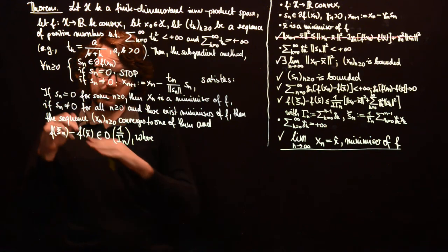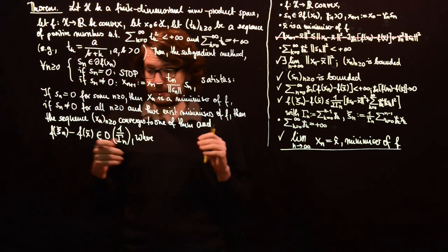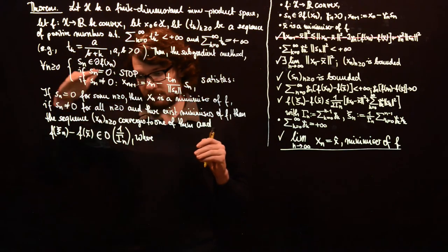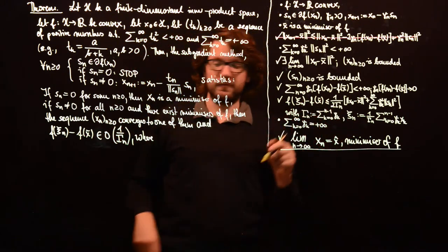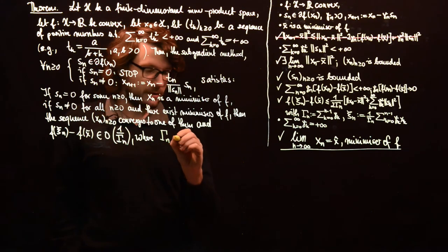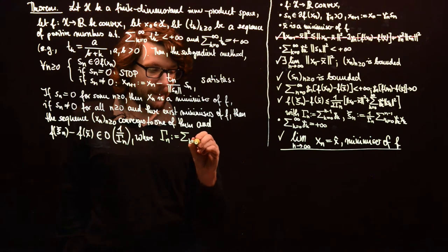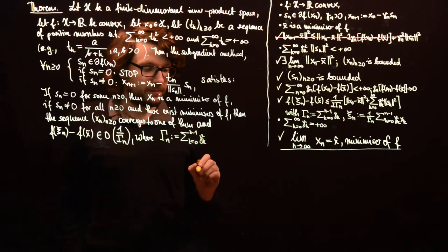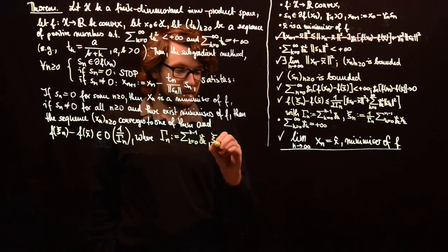So, the gap between this ergodic point here, this weighted average of our iterates and the function value at our optimal solution will be upper bounded by a constant times 1 over this sequence capital gamma of n.